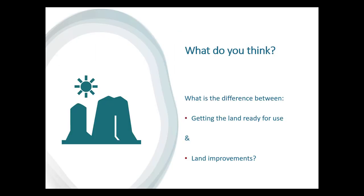What is the difference between getting the land ready to use and land improvements? Land improvements are things like fences and paving that enhance the usability of the land on an ongoing basis. Getting the land ready to use might be things like mowing or cleaning up — a one-time activity. For example, if you bought a property at a great deal because someone left all their trash there, the cost to clean it up would be capitalized to the land account, because you couldn't use the land without doing it.